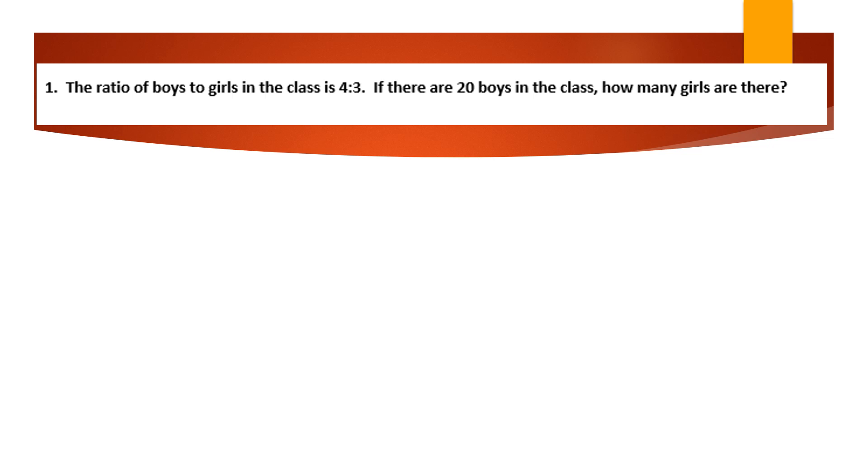So here's the problem. We've got a ratio of boys to girls in the class is 4 to 3. If there are 20 boys in the class, how many girls are there? So if you get a question like this and you see ratio, you're going to have to set up a proportion. So the ratio from boys to girls is 4 to 3, so 4 over 3.